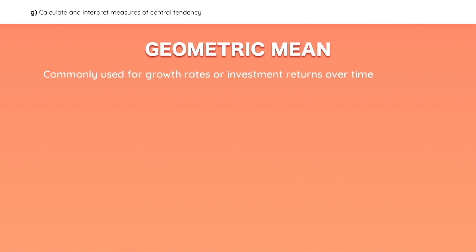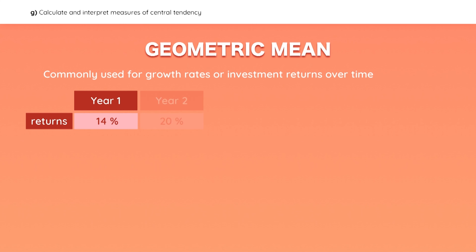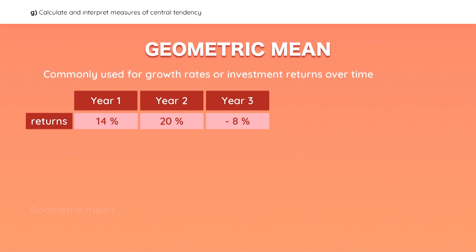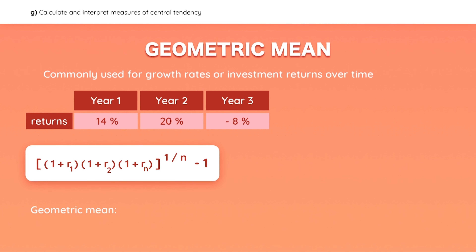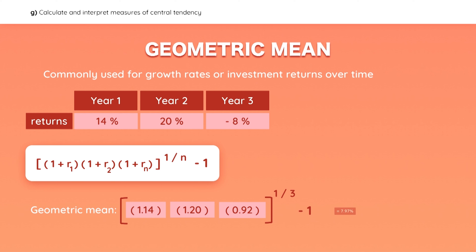The geometric mean is commonly used to calculate investment returns over several periods. Let's say your portfolio earned 14% in year one, 20% in year two, and lost 8% in year three. To calculate the geometric mean, multiply these three returns — you are essentially calculating the return over three years, which is why you take the cube root, because we are looking for an annualized return. A common mistake is to forget to subtract one at the end, so watch out for that.